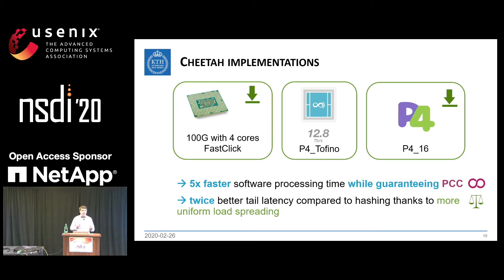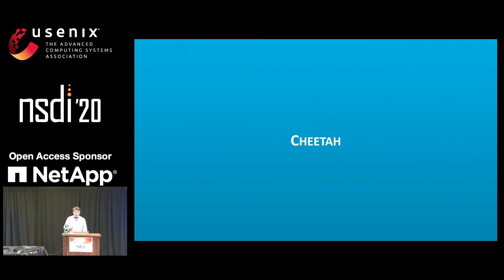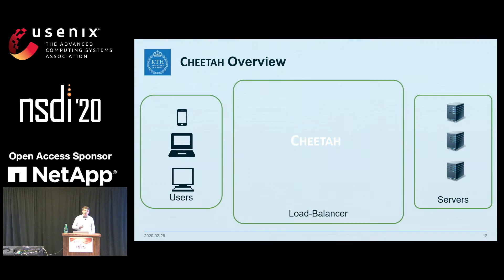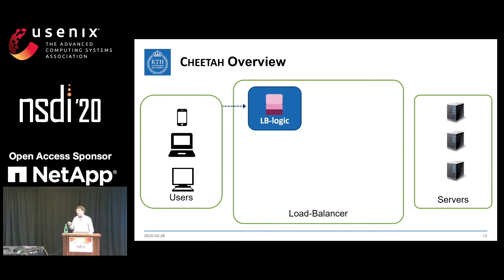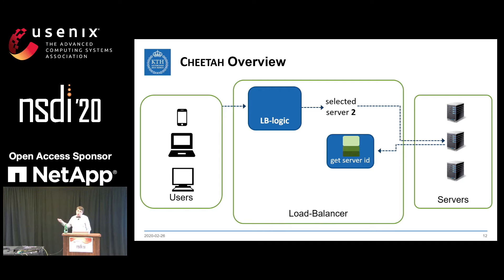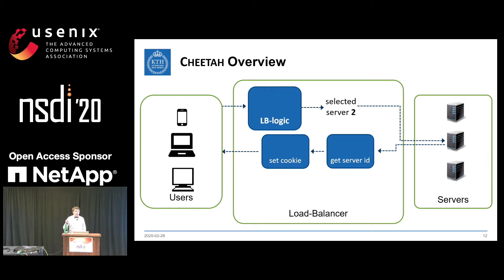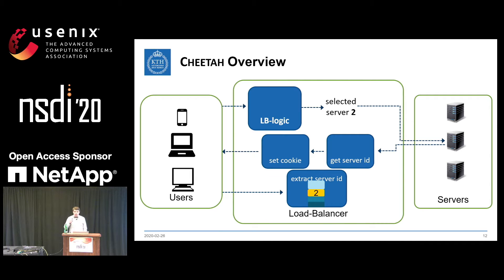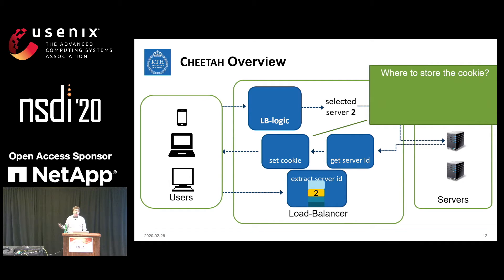So how does Cheetah work? Clients generate packets to establish a connection — typically a TCP SYN — and there we run our load-balancing logic. Using round-robin or, say, selecting the currently least-loaded server, in this case we select server 2 and send the packet to it. Nothing fancy yet. When we receive the packet back, we find the server ID — 2 — and encode it into the cookie, then send the packet to the client. When the client generates a new packet, we get the cookie back and simply extract the server ID from it.